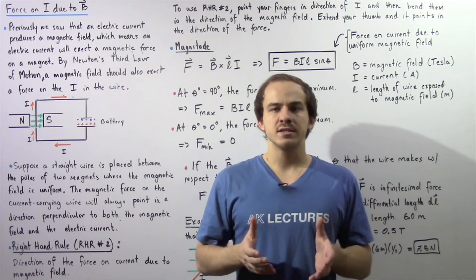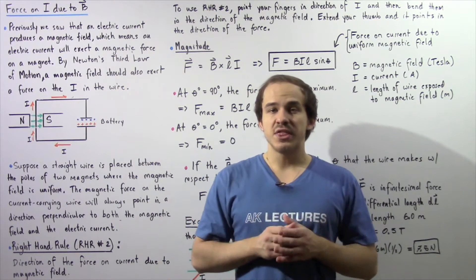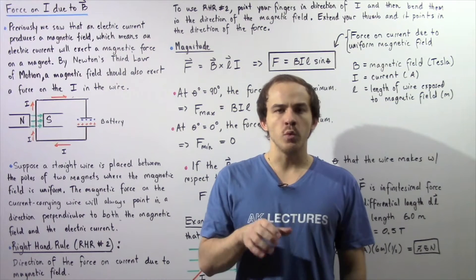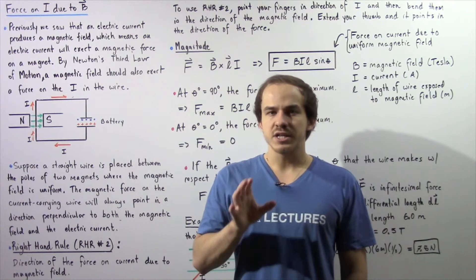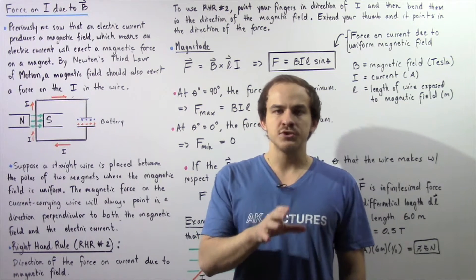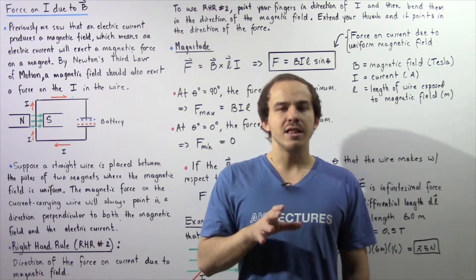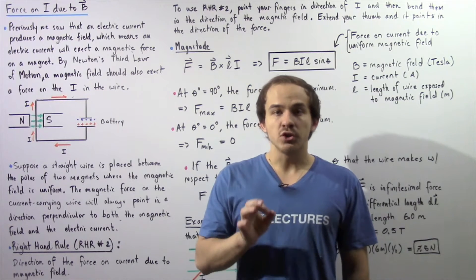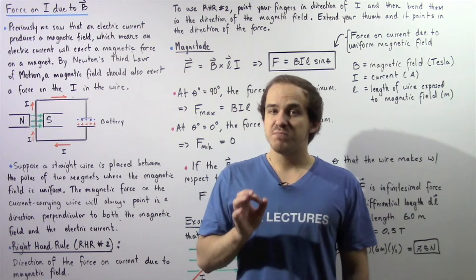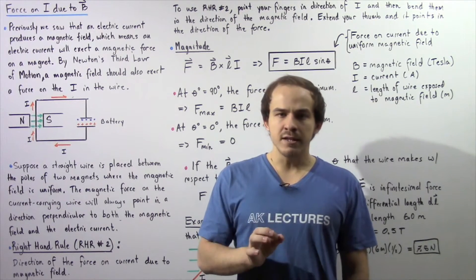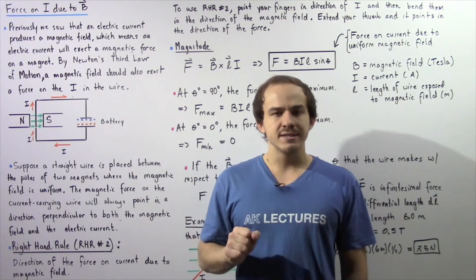In the previous lecture, we discussed the relationship between magnetism and electricity. We said that any time we have an electric current flowing in a wire, that electric current will produce a magnetic field. In other words, if we place a magnet next to our electric current, that electric current will exert a magnetic force on that magnet. Now, we know by Newton's third law of motion that every action force has an equal and opposite reaction, which basically implies that a magnetic field should also exert a force on an electric current found inside a wire.